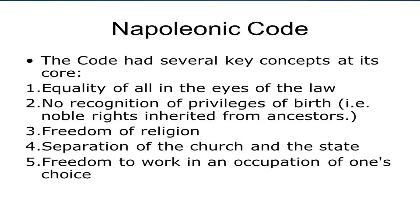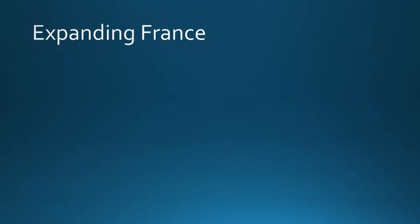To summarize the Napoleonic Code: no recognition of privileges, everyone is equal at birth, freedom of religion, separation of church and state, free choice of occupation, and equality of all in the eyes of the law.